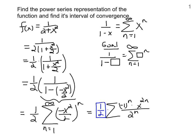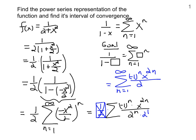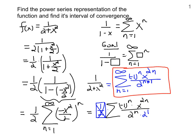The one half on the outside comes inside as 2 to the 1. So our final power series representation is the summation from n equals 0 to infinity of negative 1 to the n times x to the 2n, all over 2 to the n plus 1. That is the power series representation of 1 over 2 plus x squared.